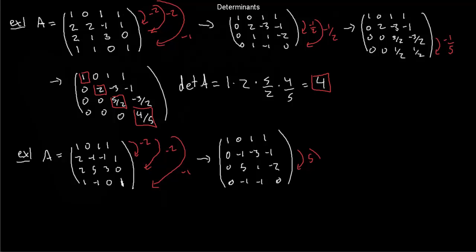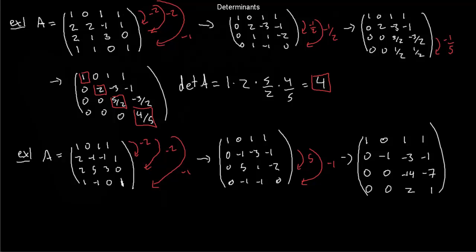The matrix after those operations is: 1, 0, 1, 1; 0, −1, −3, −1; 0, 0, −14, −7; 0, 0, 2, 1. Keep going — multiply by −1/7 times row 3 and add it to row 4. You'll get an upper triangular matrix, but you'll see in the final row a row of zeros: 0, 0, 0, 0.